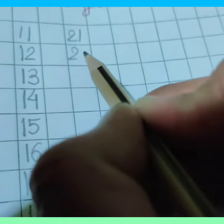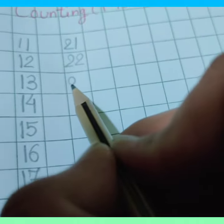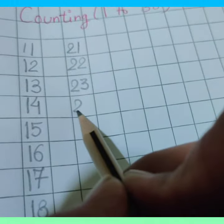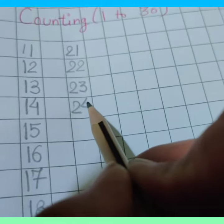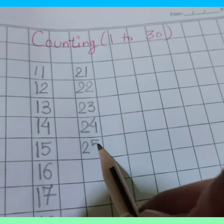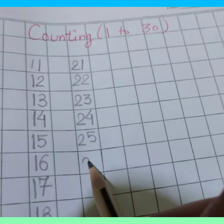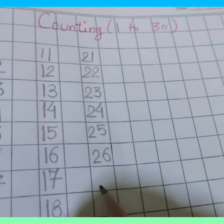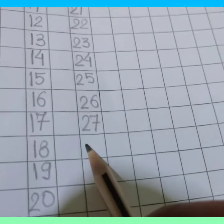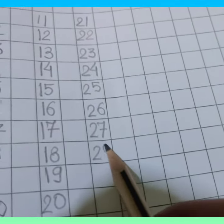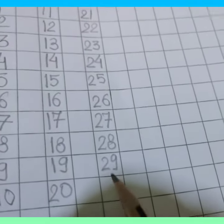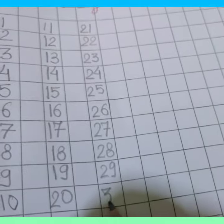21, 22, 23, 24, 25, 26, 27, 28, 29, then 30.